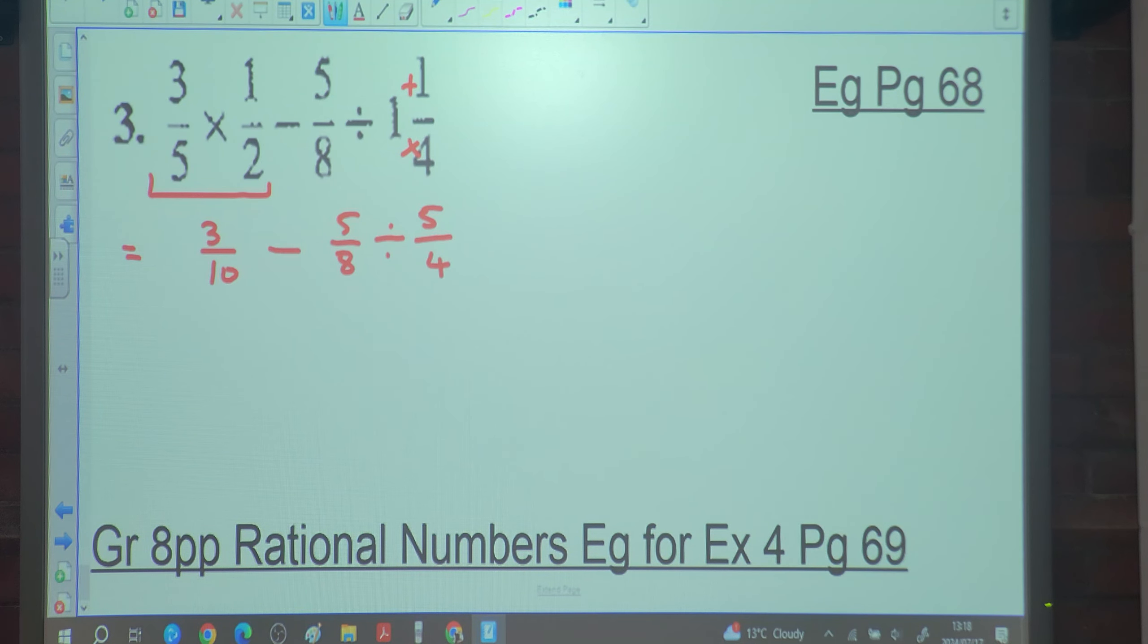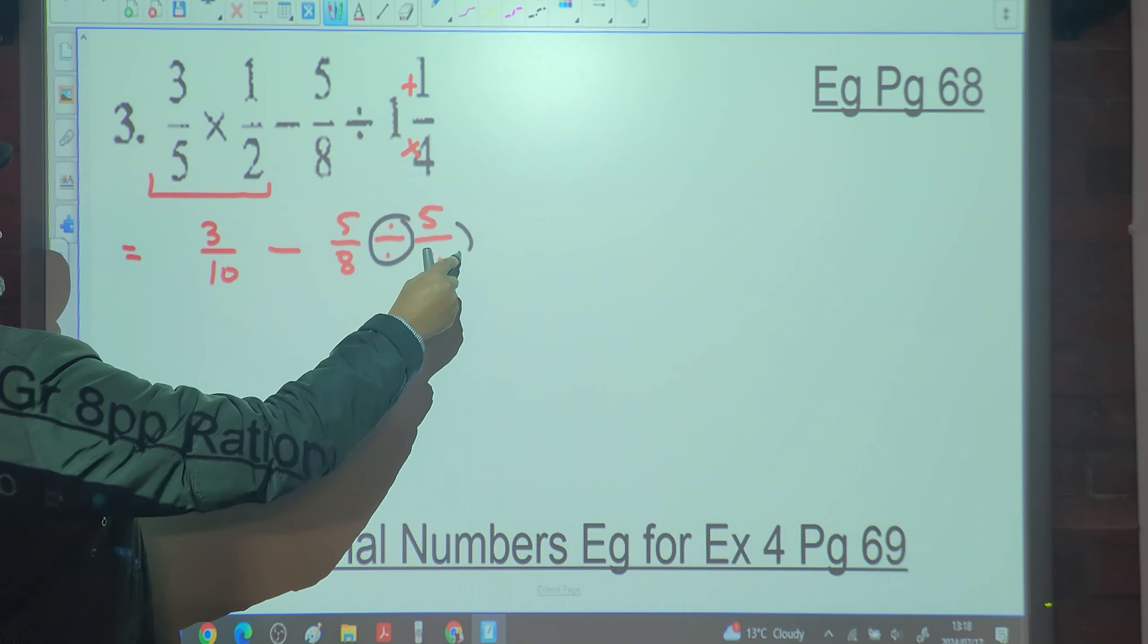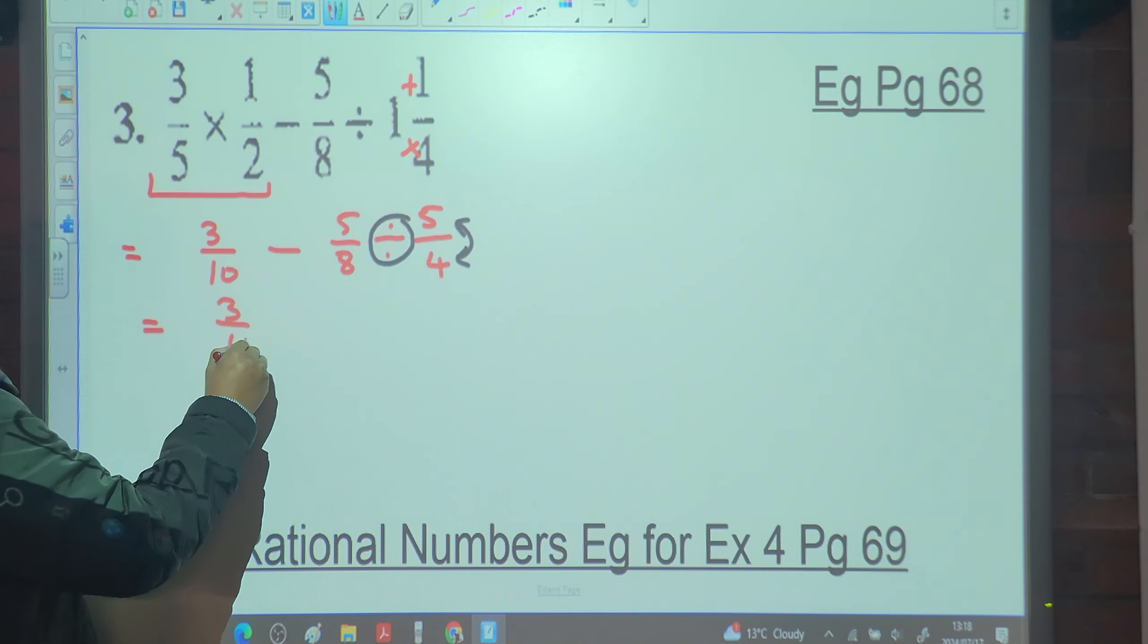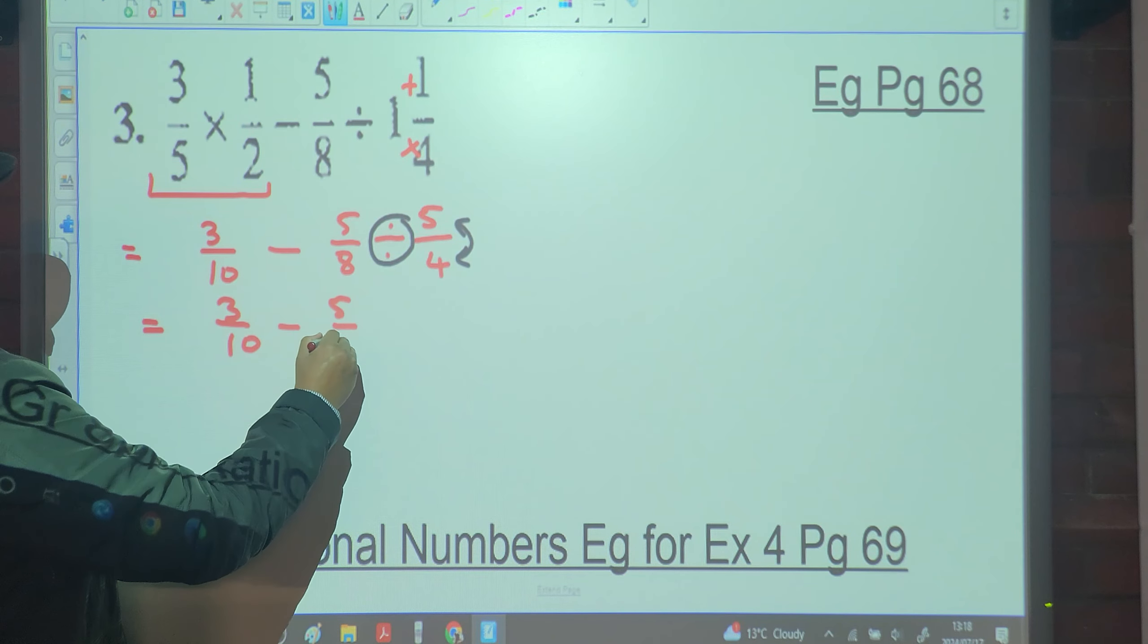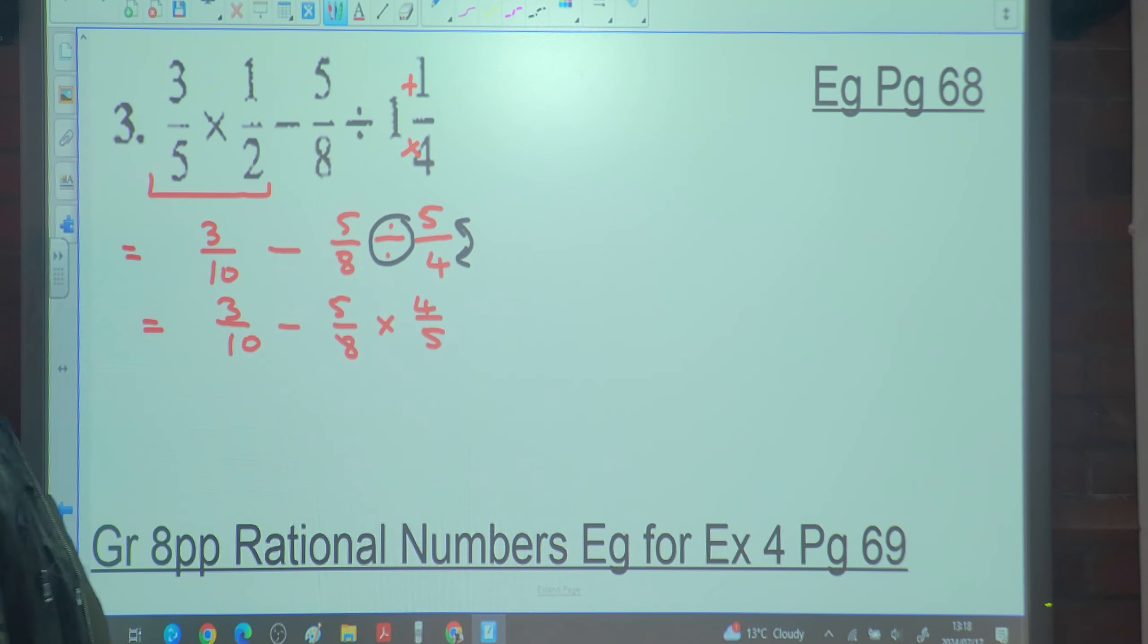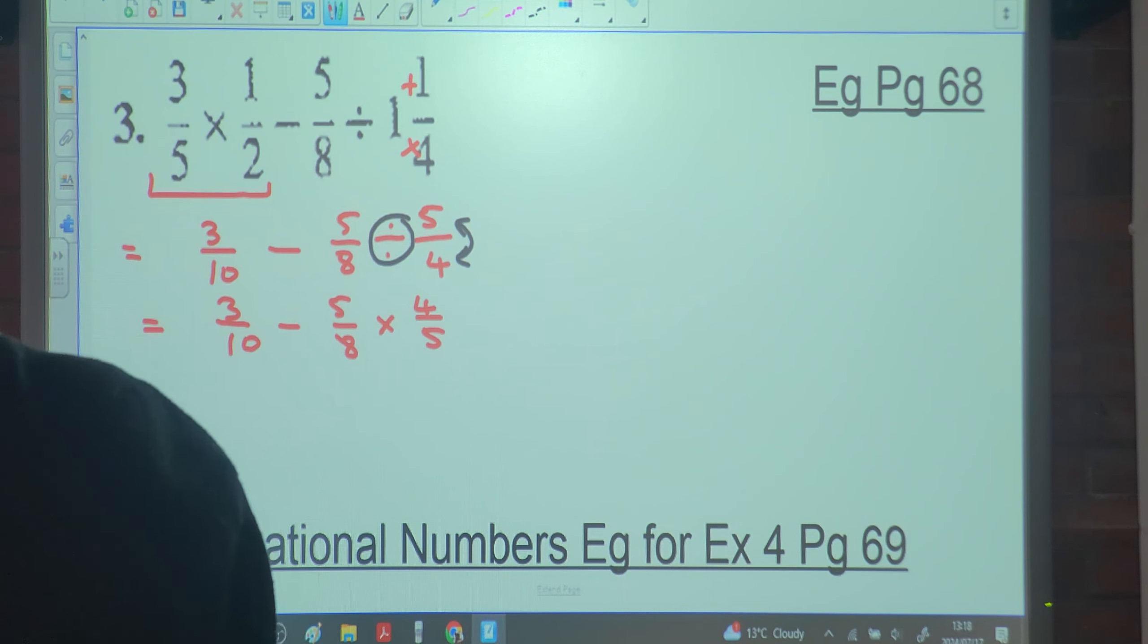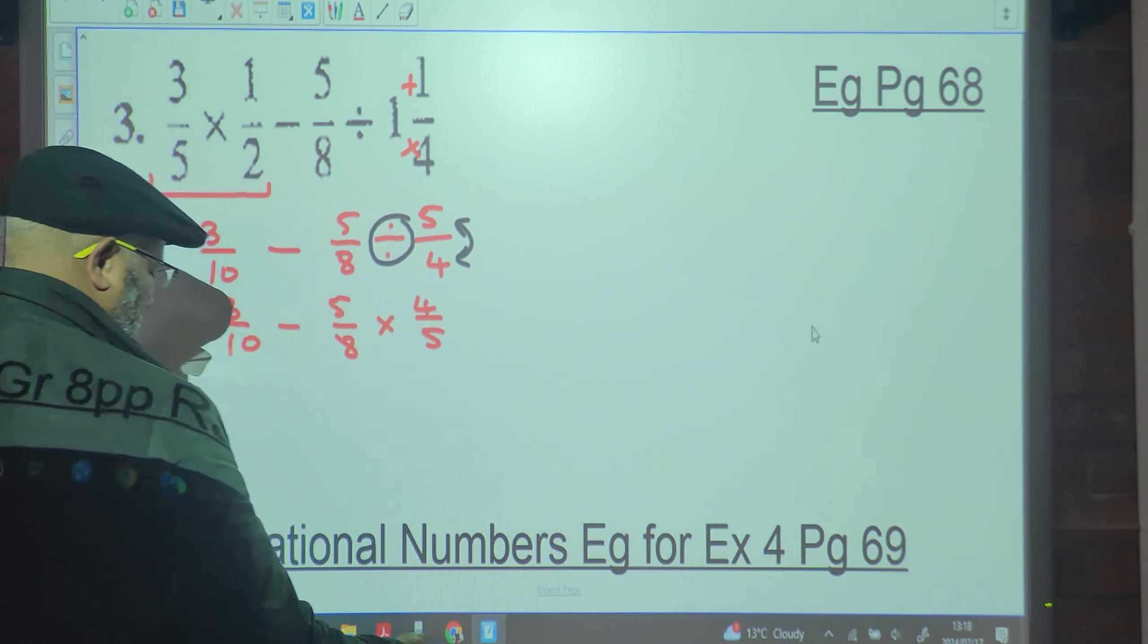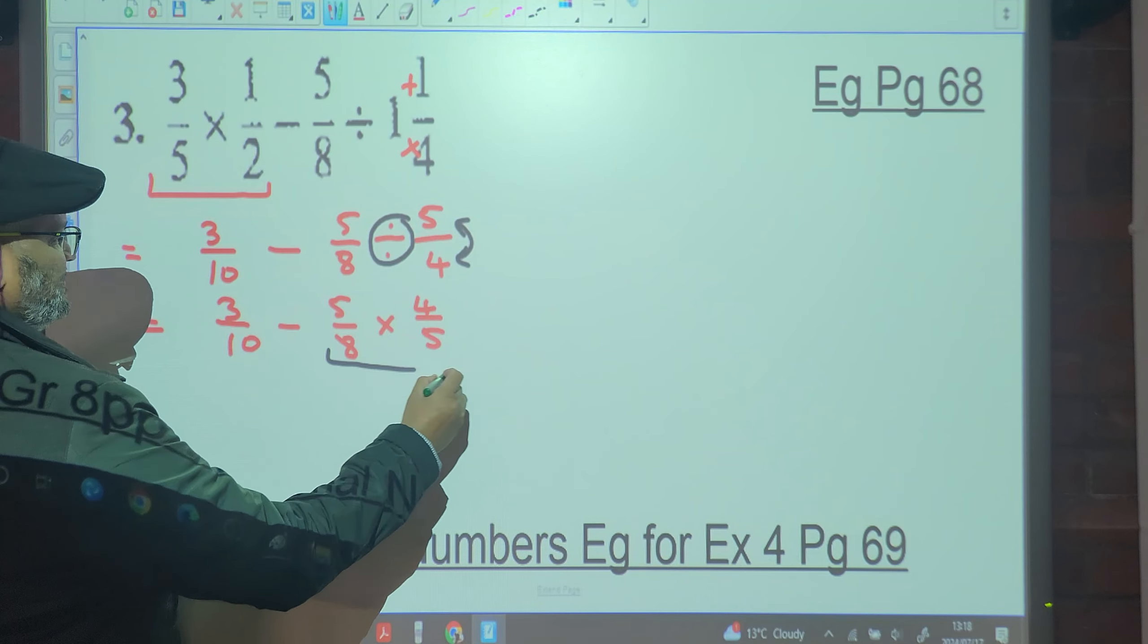Now what am I doing? Numbered in times. Change that to multiplication. It's going to be three over ten minus five over eight multiplied by four over five.